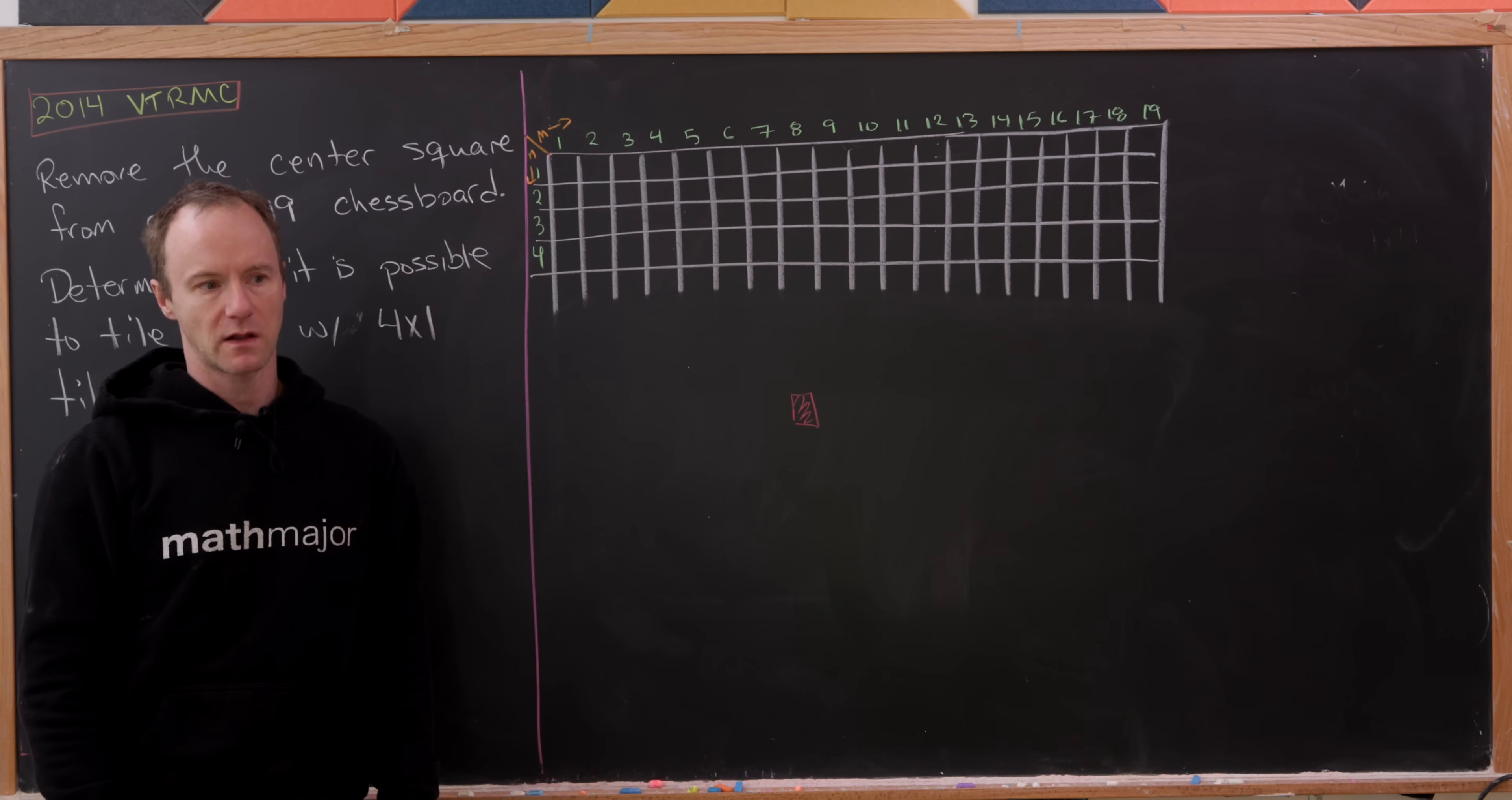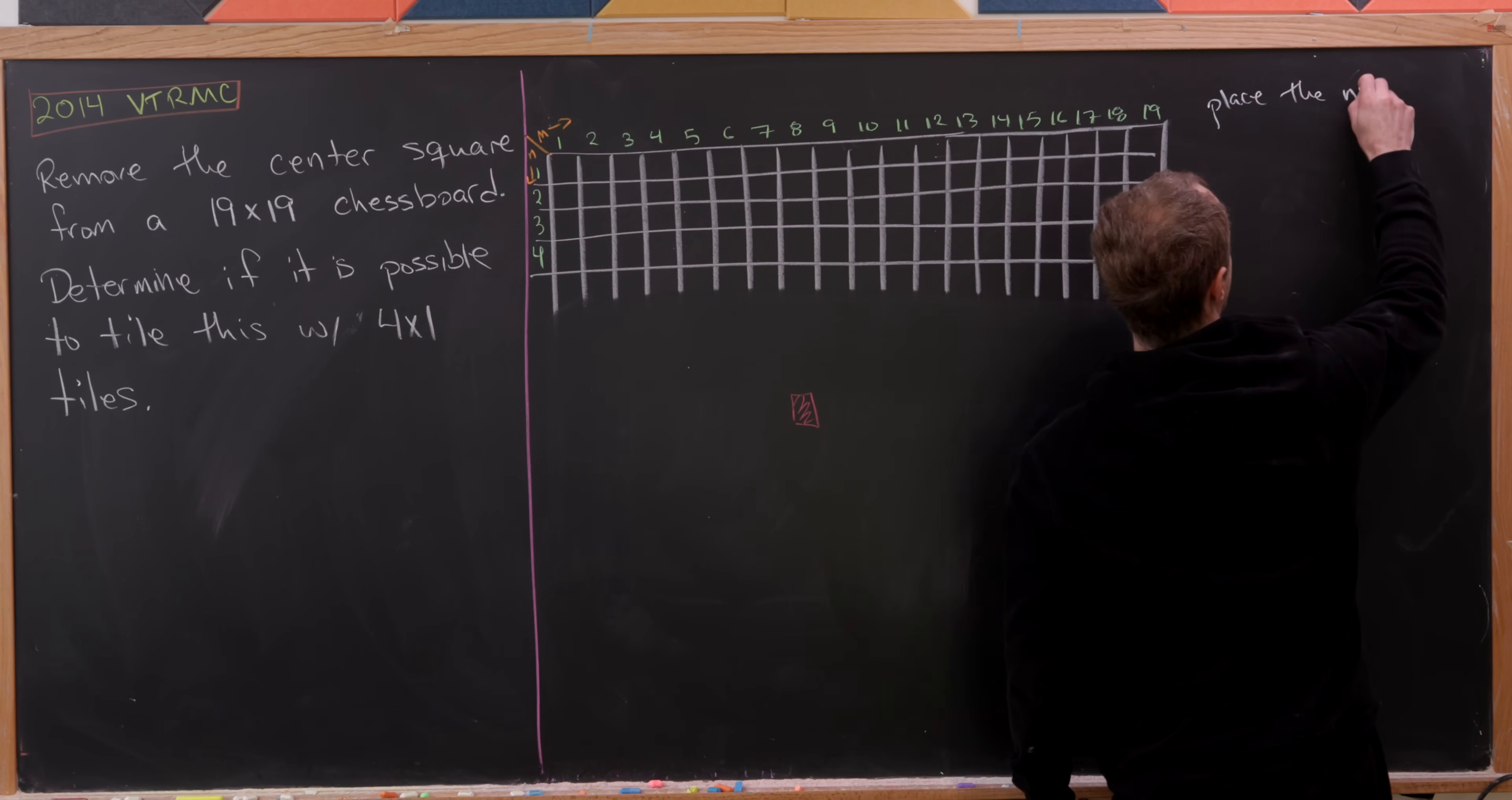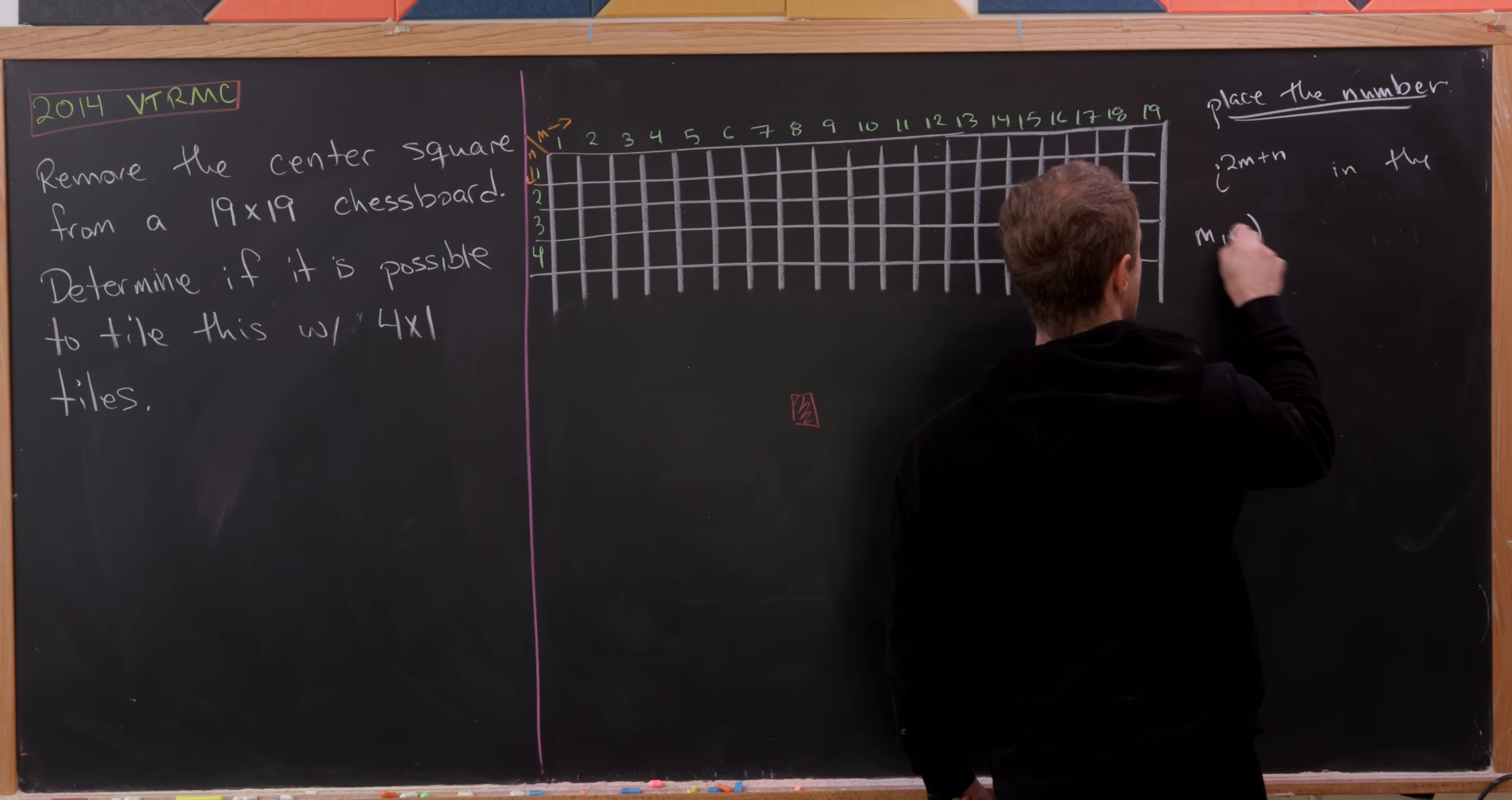Now, I guess maybe the first guess would be to tile this exactly the same as we did before with powers of i. But in fact, that doesn't quite work here. We're going to need something a little bit more subtle. And the way that we do it here is to place the number, and it is going to be a power of i, but like I said, it's kind of a more subtle power of i.